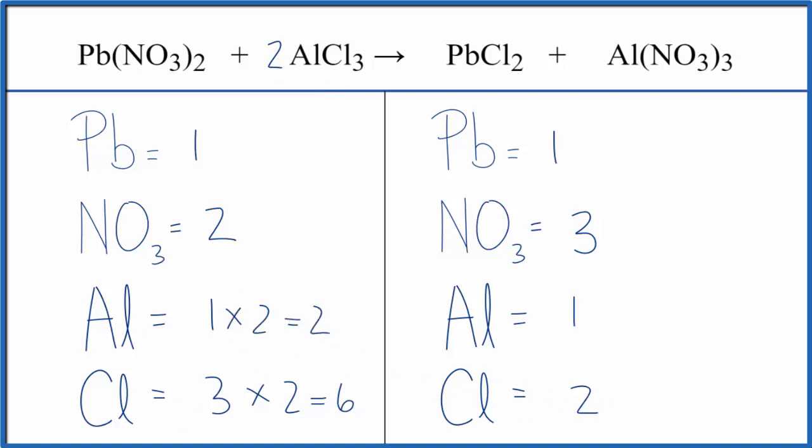So now we can fix the chlorine atoms. I need 6. On this side, I have 2. So let's put a 3 as our coefficient. 2 times 3, that gives us 6. So the chlorines are balanced. And then the leads, 1 times 3, 3 lead.